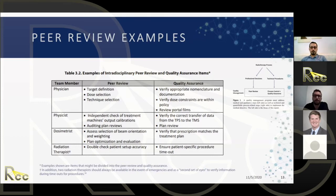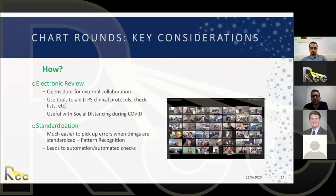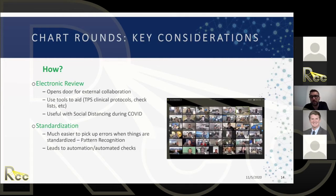One of the most important questions is how to conduct chart rounds. Before COVID, it used to be 50 to 60 people crammed into a room with a projector. Now we recommend moving to electronic review. This opens the door to external collaboration, use of built-in planning tools — Eclipse has very nice checklists and clinical protocols that indicate pass/fail criteria — and of course supports social distancing. Chart rounds now typically looks like a large Zoom meeting.